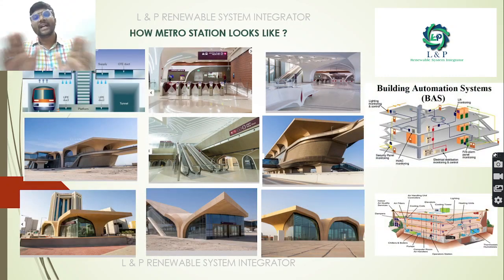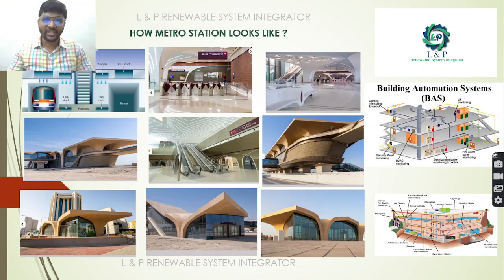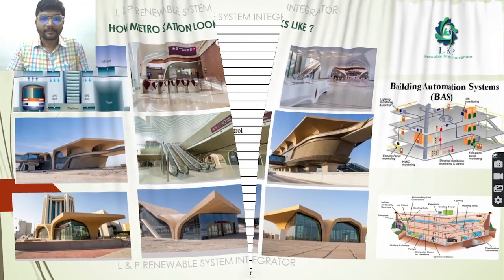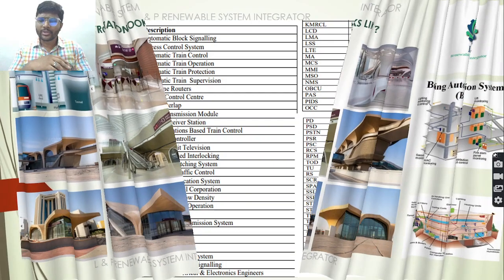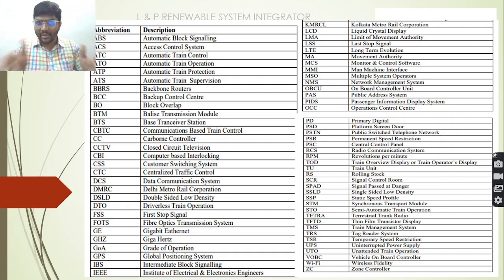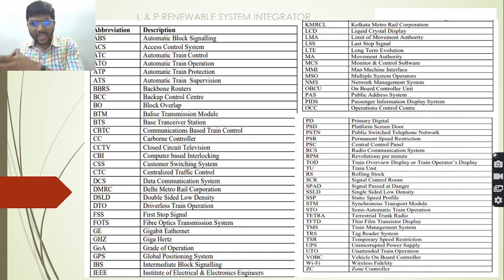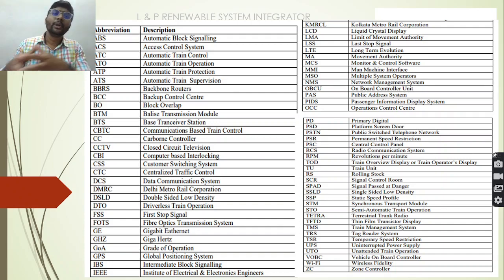This is a typical view of a metro station — there are many designs available. Today we will use many short forms, so if you have any doubts you can refer to the abbreviations provided here. We have given abbreviation clarity for ATC, ATO, ATP, DGS, and many other terms. If you have any confusion while watching, you can rewind and check these abbreviations.